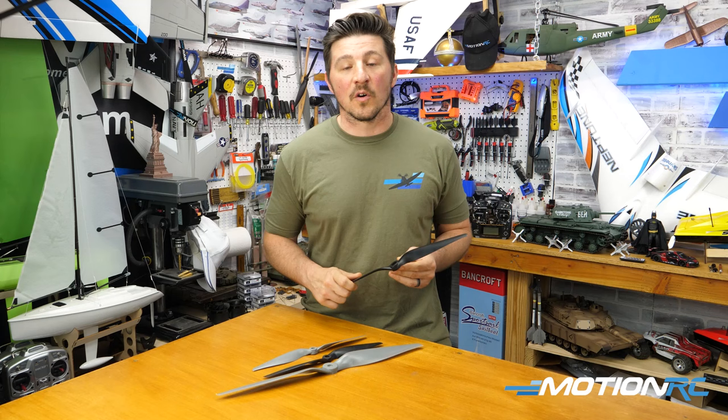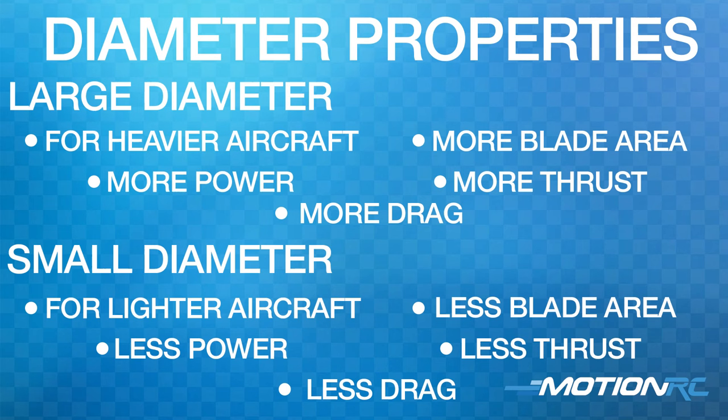Basically, the oversimplification of it is: a large diameter prop with a low pitch is going to be great for slowing down your aircraft, great for vertical climbing, and it's going to have more thrust and a little more efficiency.